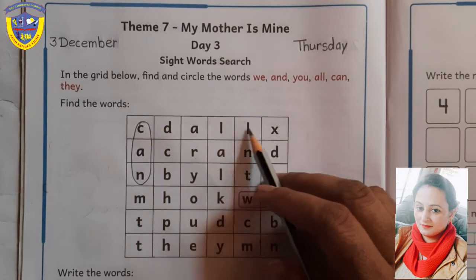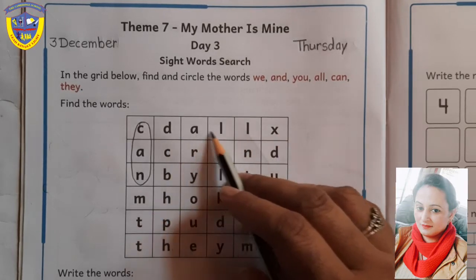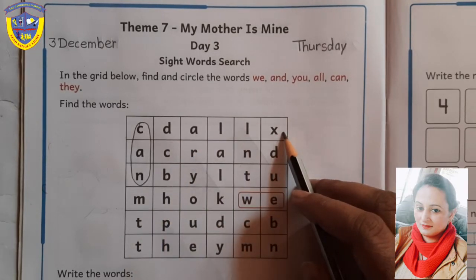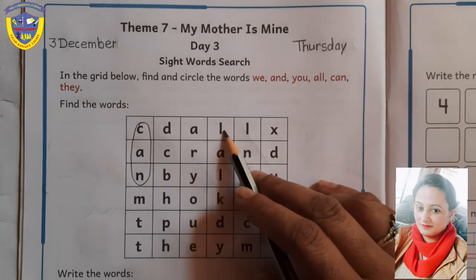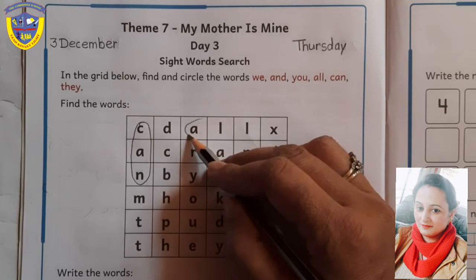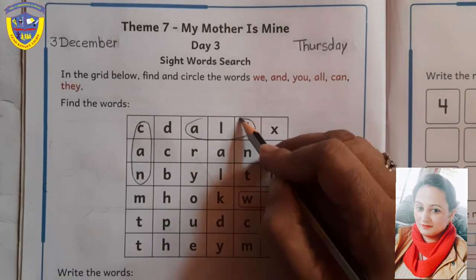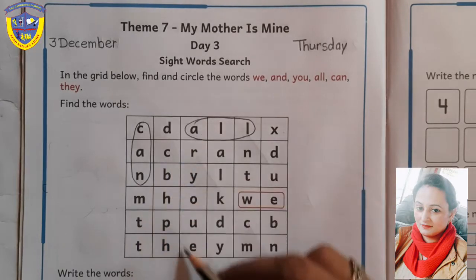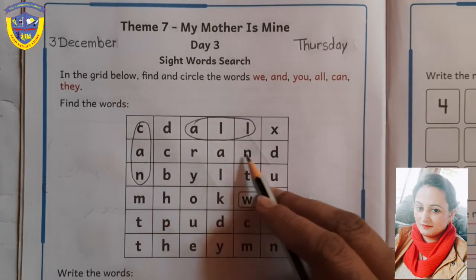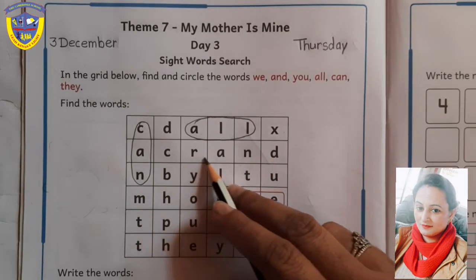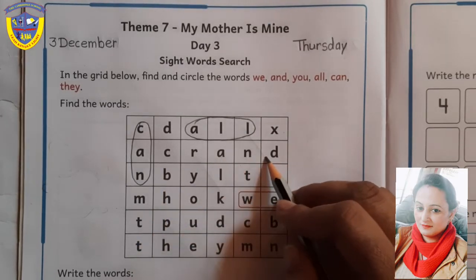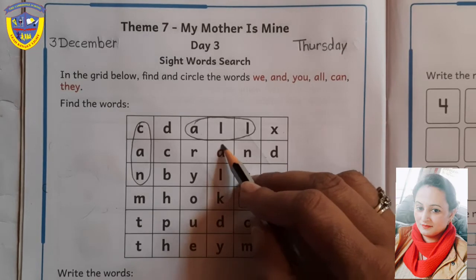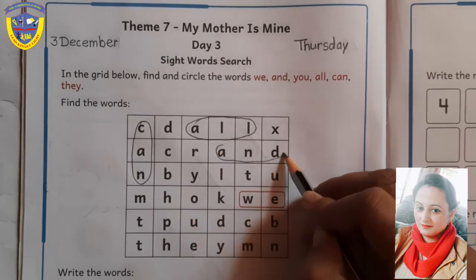In this line. No. Find out. Yes. A-double-L. All. A-double-L. All. In the next line, find out. Yes. A-double-L. All.